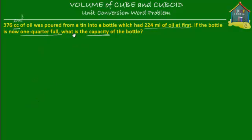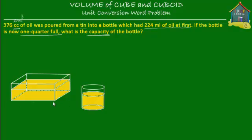Now here is the thing. There was a tin from which 376 cubic centimeters of oil was poured into a bottle, and the bottle already had 224 milliliters of oil. A tin can be of any shape — it can be rectangular or cylindrical — and it doesn't matter which shape it was. What is important is the volume of oil poured out of the tin into the bottle: 376 cubic centimeters.